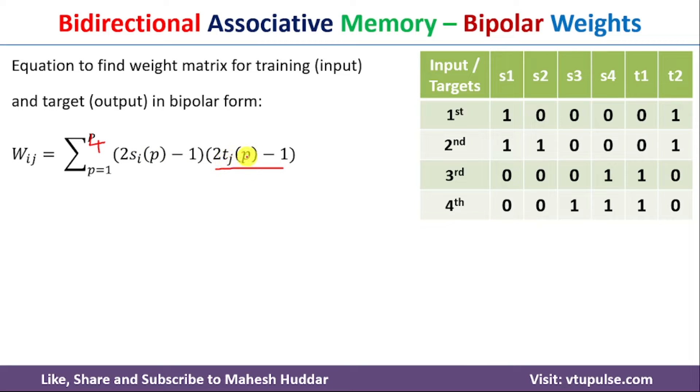The T term in the equation is 2 times T_J(P) minus 1, where T_J can go from T1 to T2 and P goes from 1 to 4.